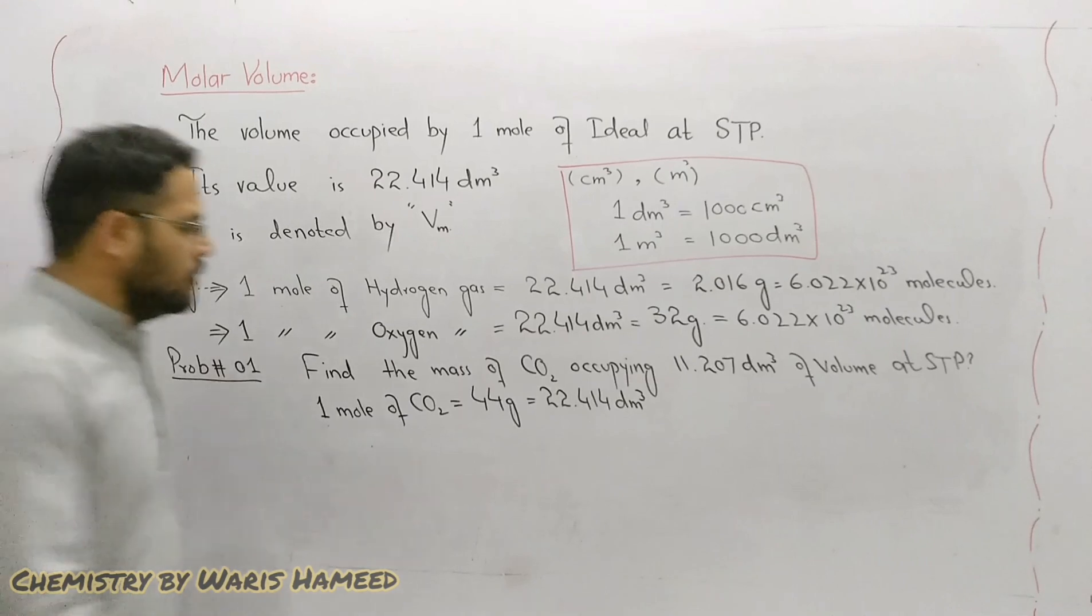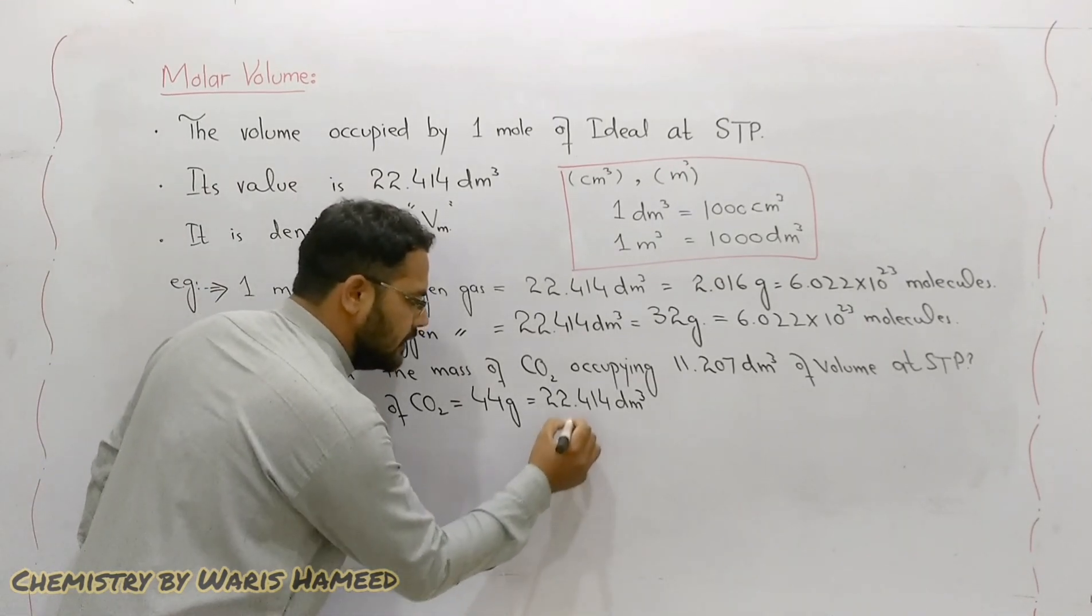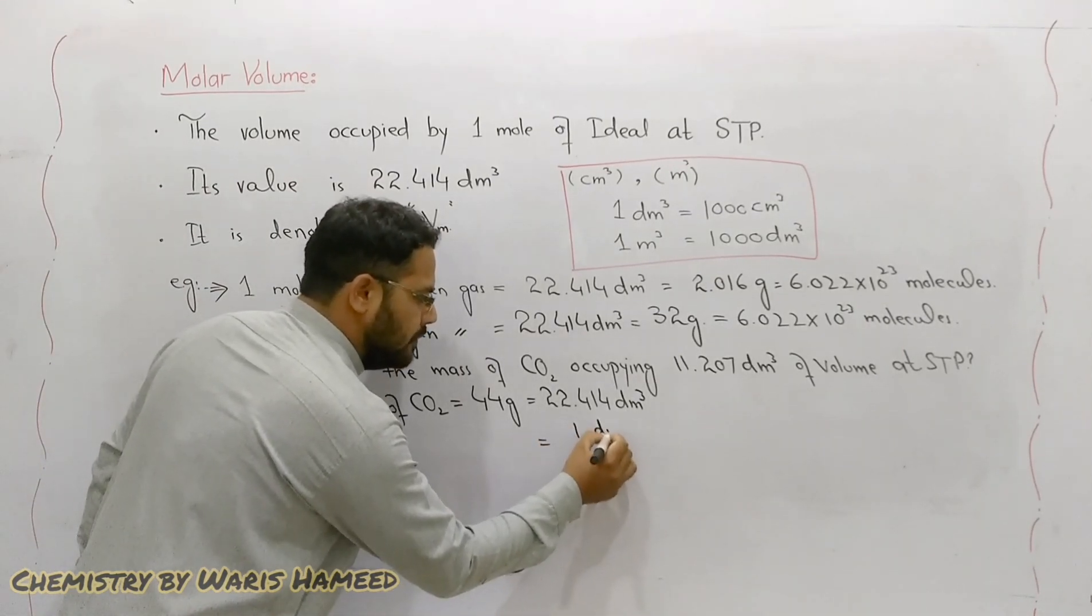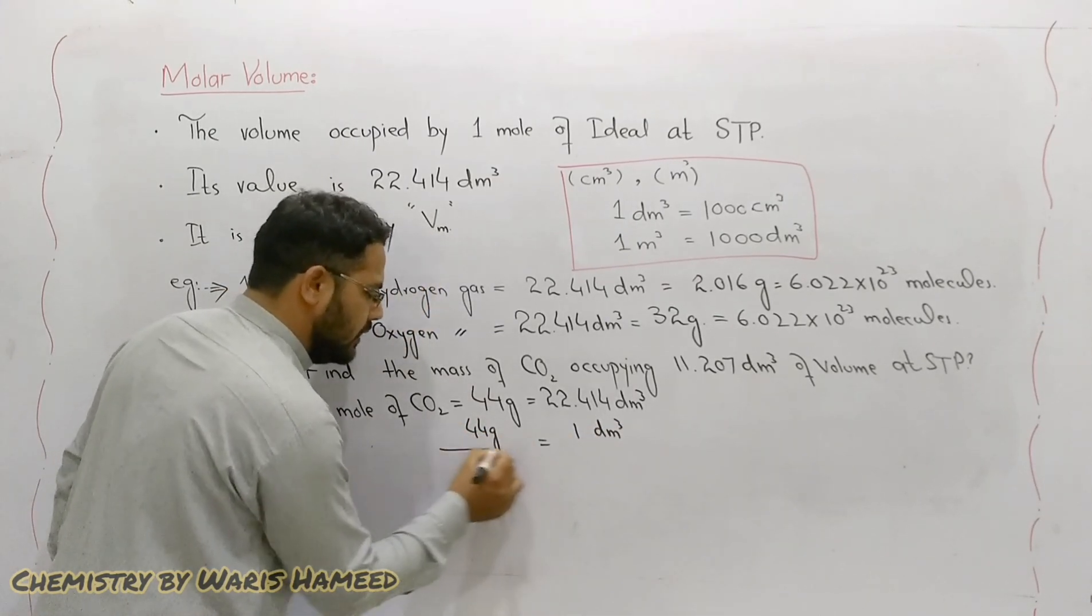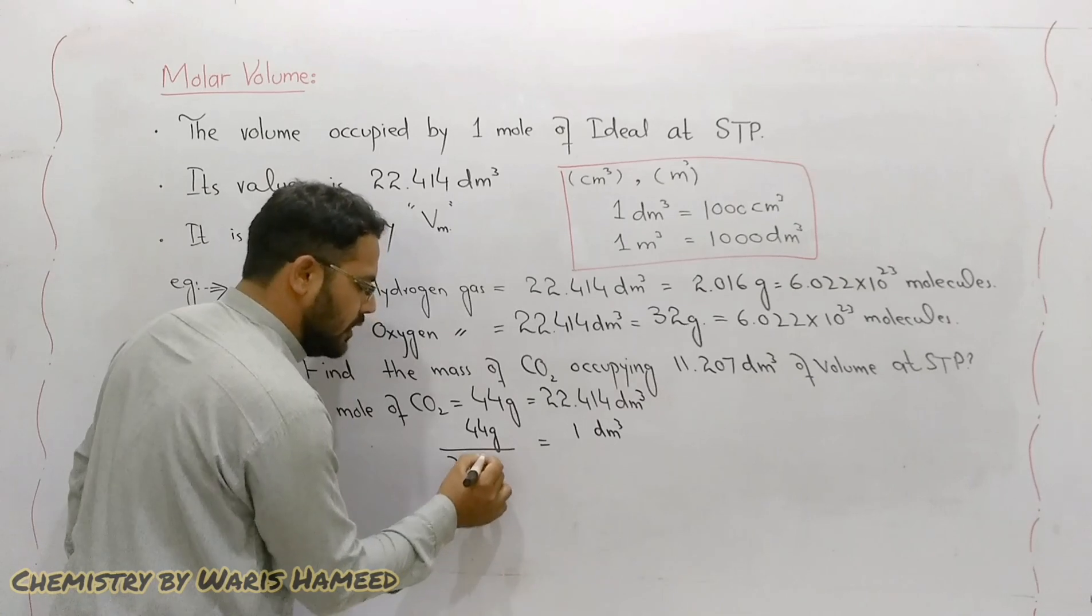Therefore, 1 dm³ will be 44 grams over 22.414.